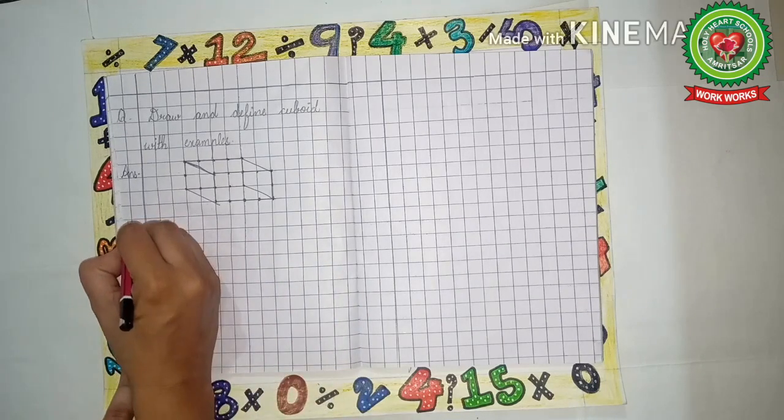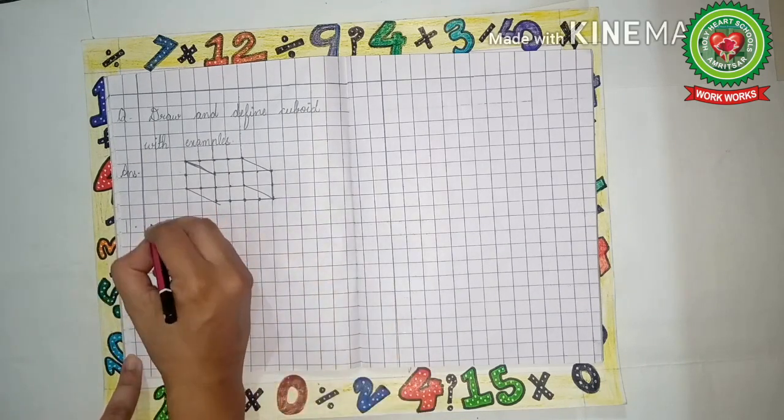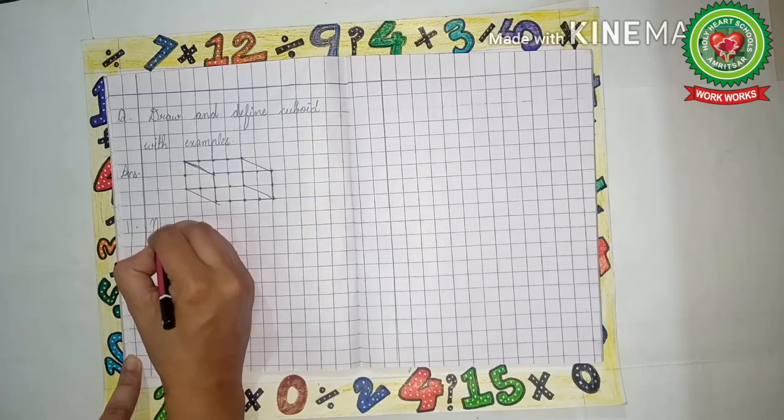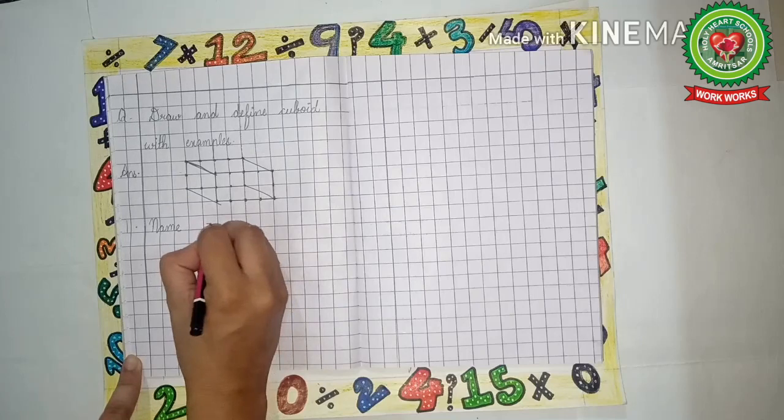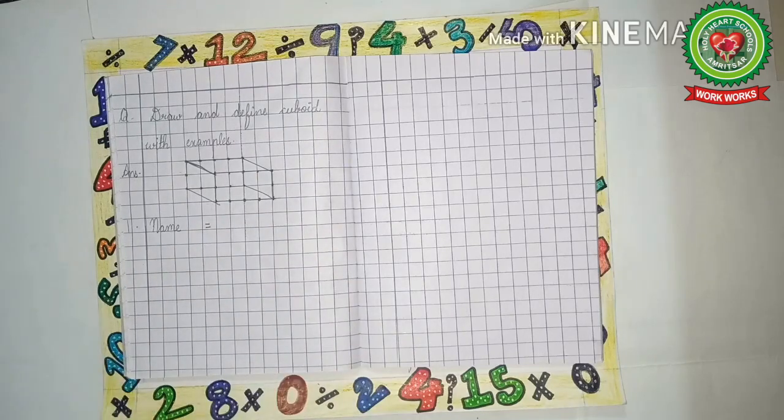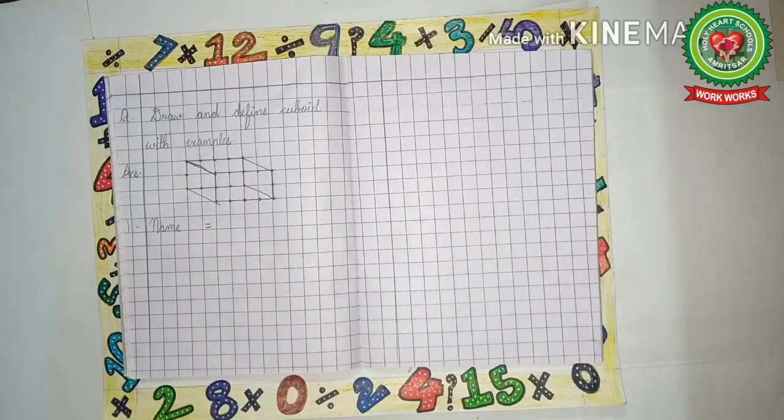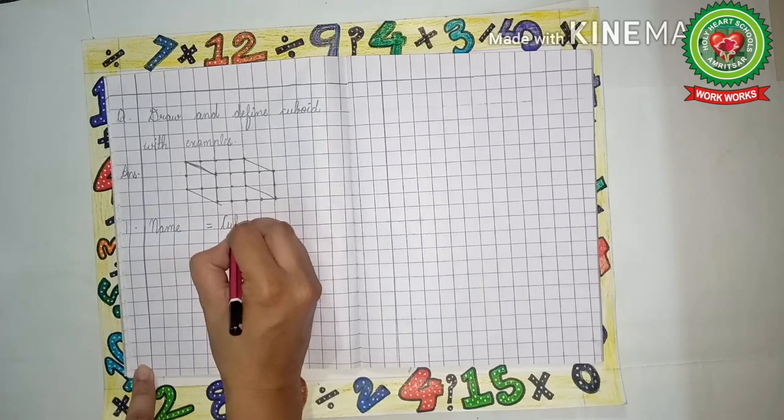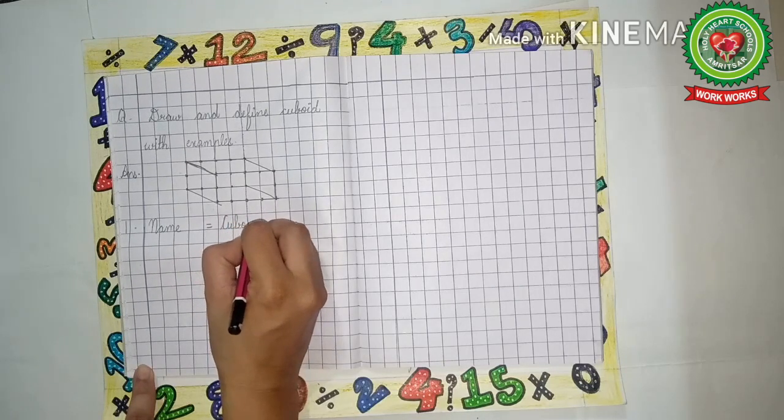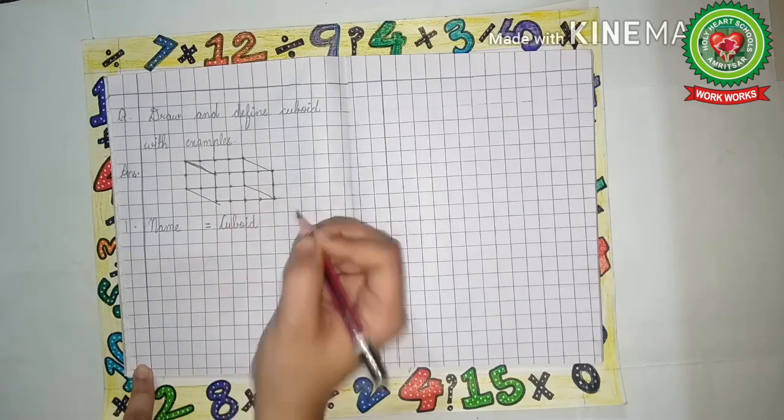Now leave one line. One dot: Name—N-A-M-E. Name equals to... Now what is the name of the figure that we have drawn? This is a cuboid, so we will write cuboid—C-U-B-O-I-D.